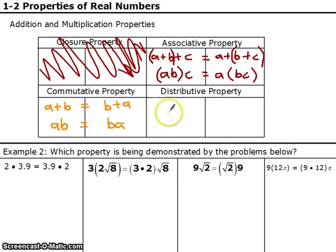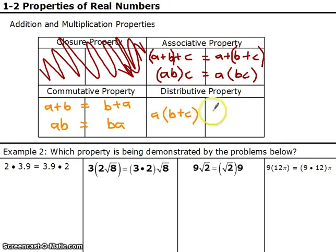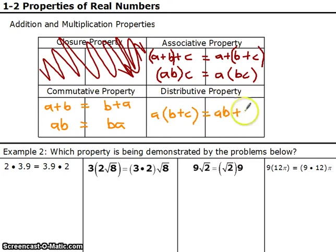The last one is the distributive property — a combination of addition and multiplication. If I have A being multiplied by (B plus C), I can distribute the A and multiply it by each one separately: A times B plus A times C. You're probably familiar with the distributive property from Algebra 1 and Geometry.